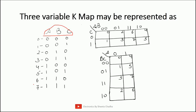By using 3 variables we can have 8 entries in the truth table. In the first matrix type, we have 2 variables A and B on one side and 1 variable C on the other side. C has only 2 options, which is why only 1 variable is written there. On the A, B side we have 4 combinations, which is why 2 variables are written.